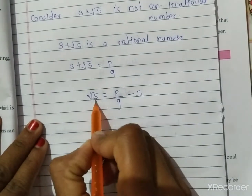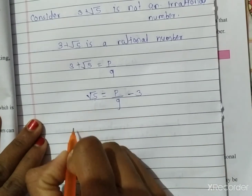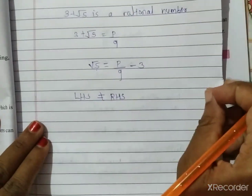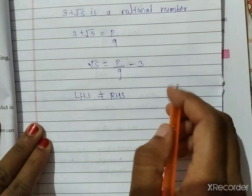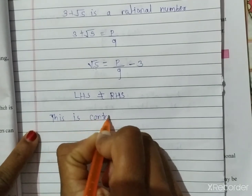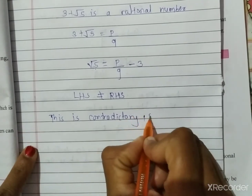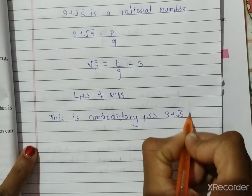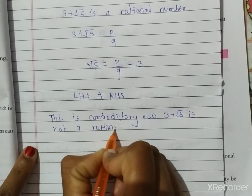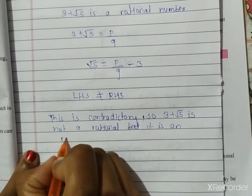But √5 is an irrational number. So LHS is irrational while RHS is rational — LHS is not equal to RHS. Therefore this is a contradiction to our sentence, and so 3 + √5 is not a rational number — it is an irrational number.